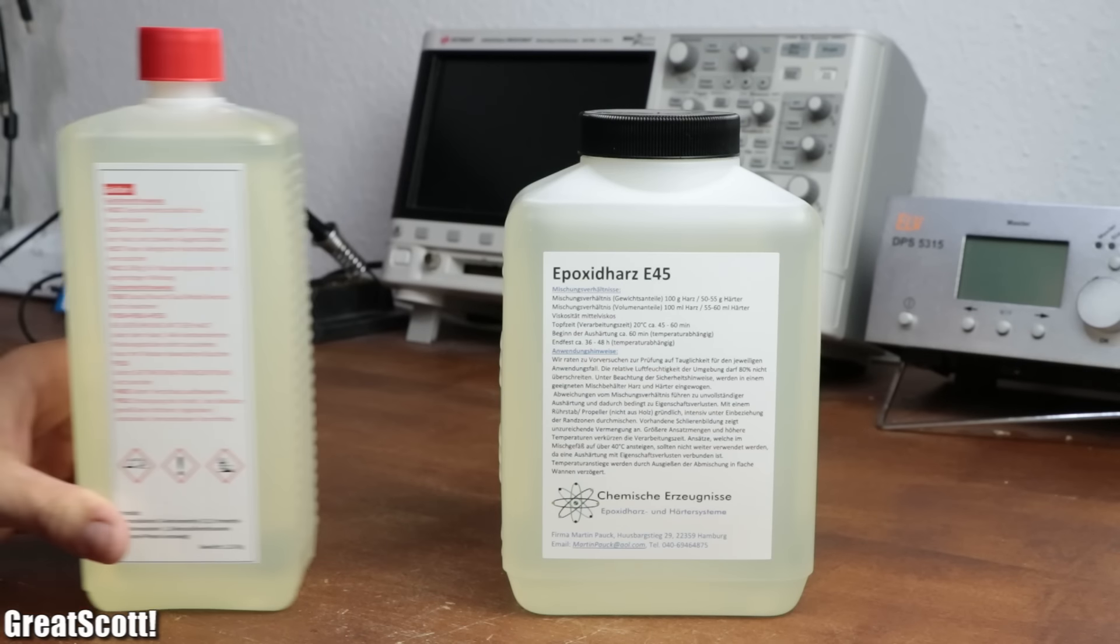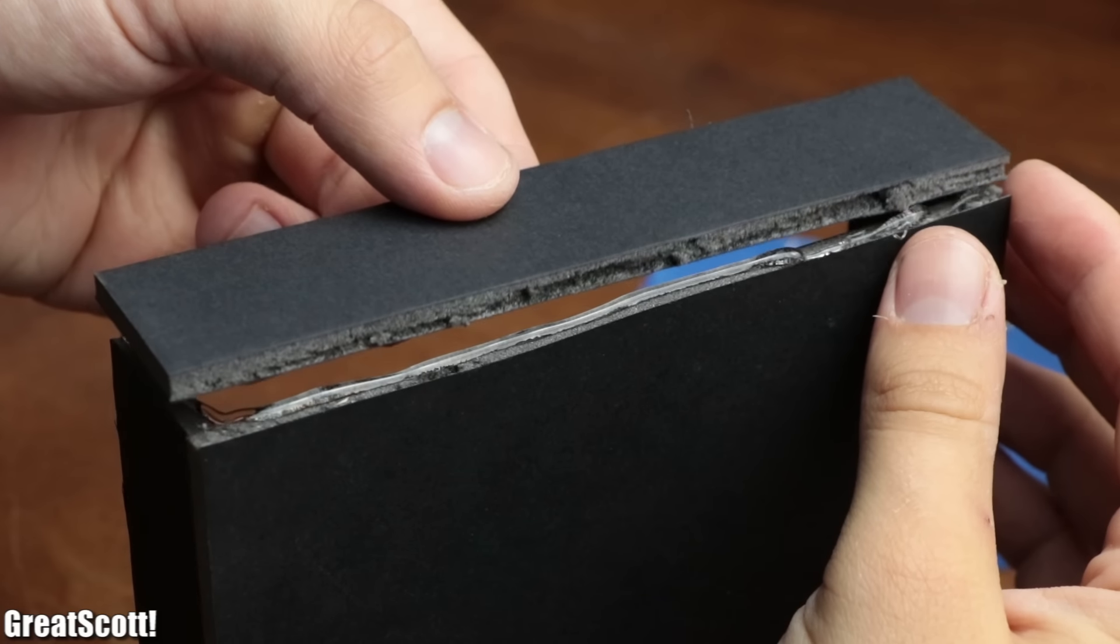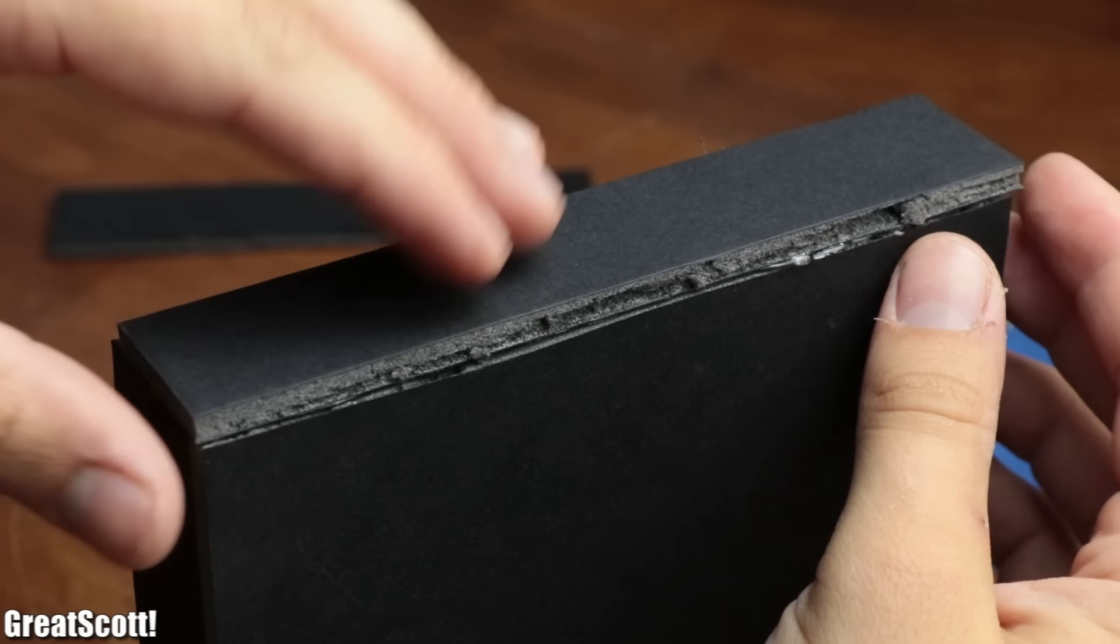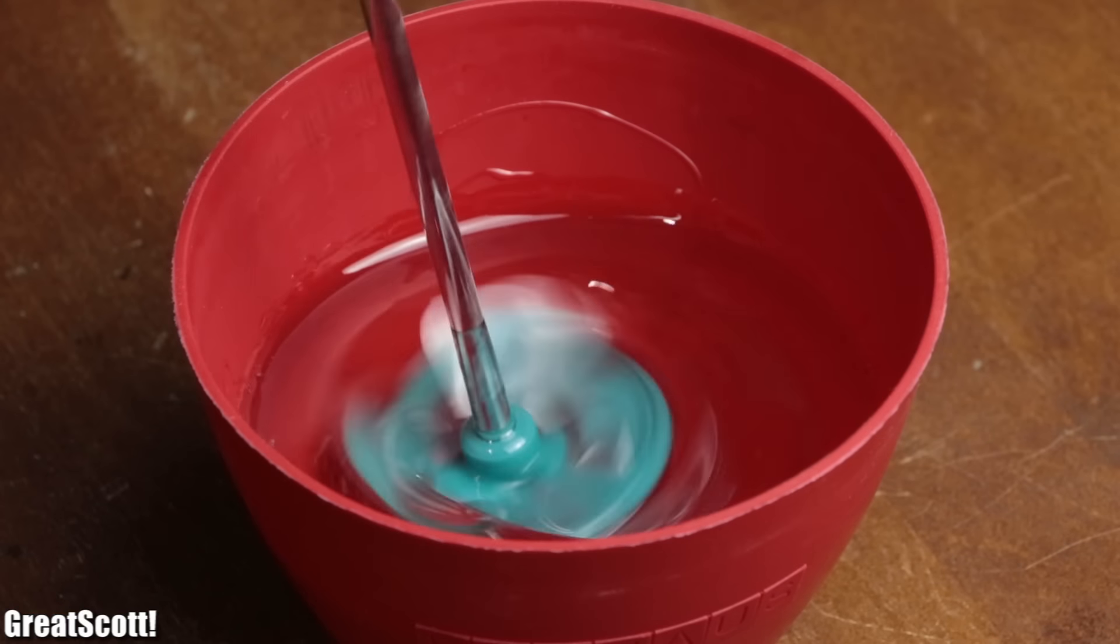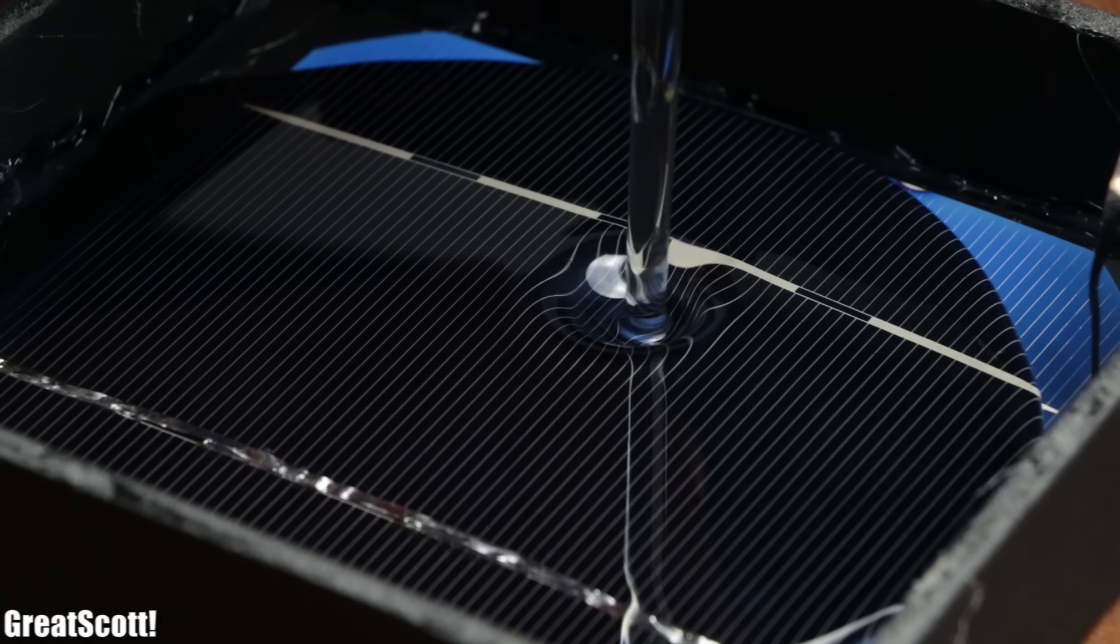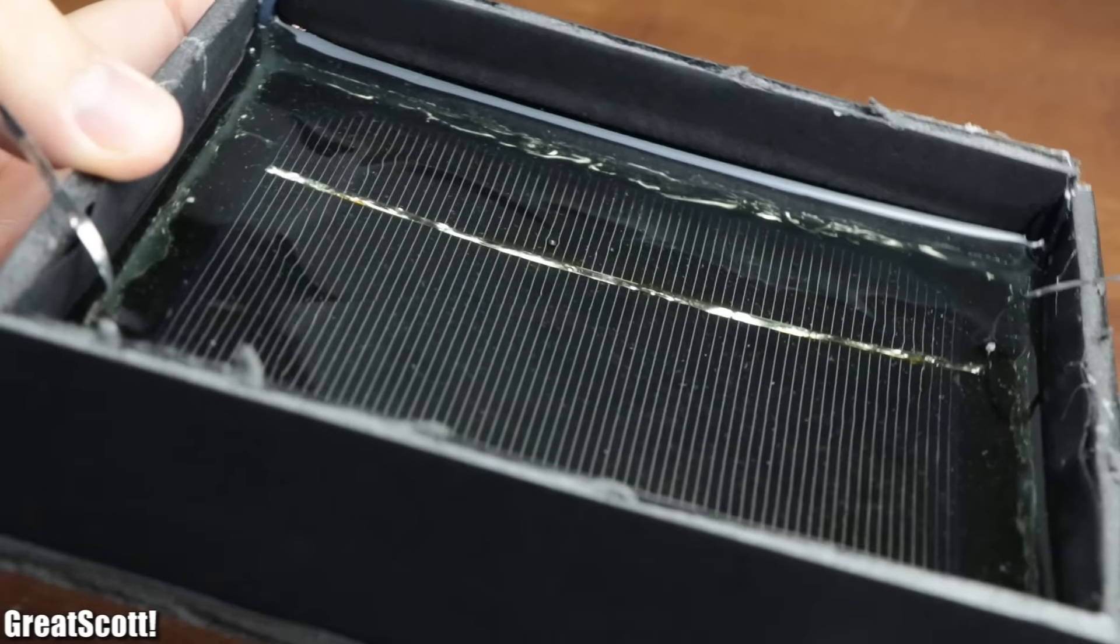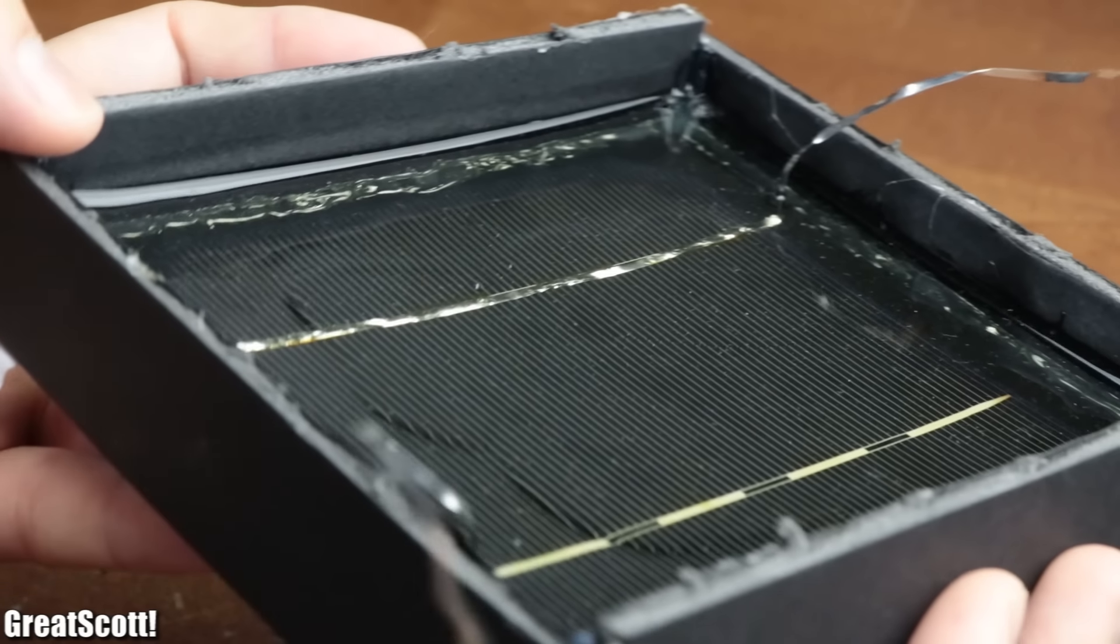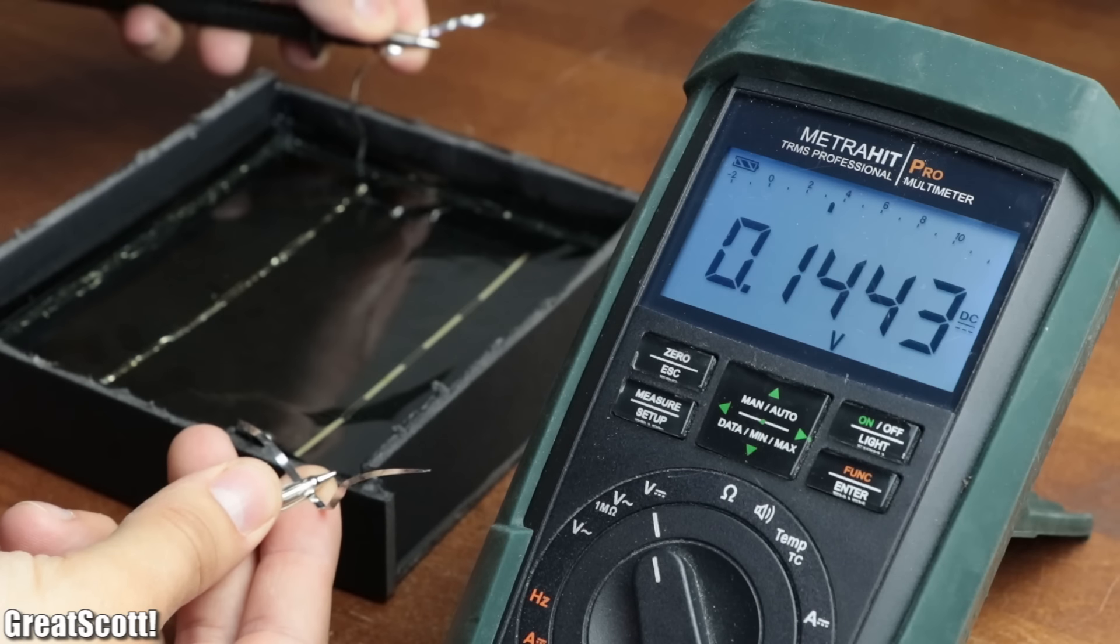For that I got myself this epoxy resin. But before trying this method on the bigger solar panel, I created myself a small foam plastic container, placed a single solar cell inside it and filled it up with the mixed up resin. After waiting for a day the resin hardens and the end result looked pretty decent. The solar cell did also not crack due to the pressure, which was important, and also still worked without any problems.